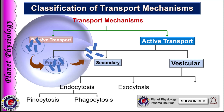Many times a substance is picked up from one end of the cell by endocytosis and released from the other end by exocytosis. In this case, the process is called transcytosis or cytopempsis. It is commonly used to move macromolecules across the cell, for example transfer of antibodies across the placenta.